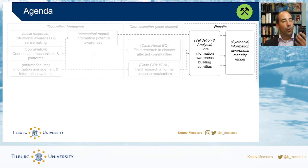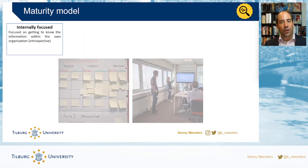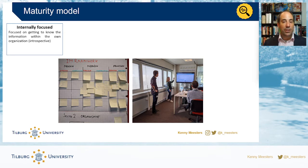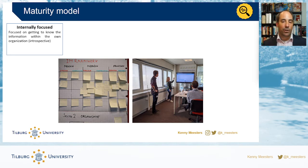Through our interviews and data analysis, we found it's almost a maturity model — organizations grow their information awareness in a couple of steps. The first step organizations go through is really internally focused: it's about their own information needs, but also their own information availability — which people in my organization have information that I could use.